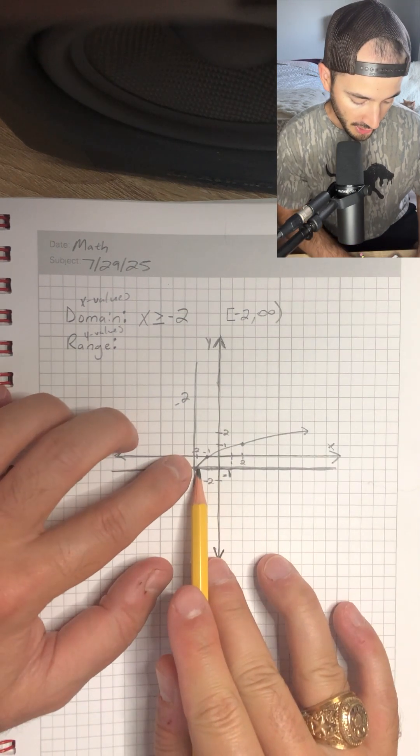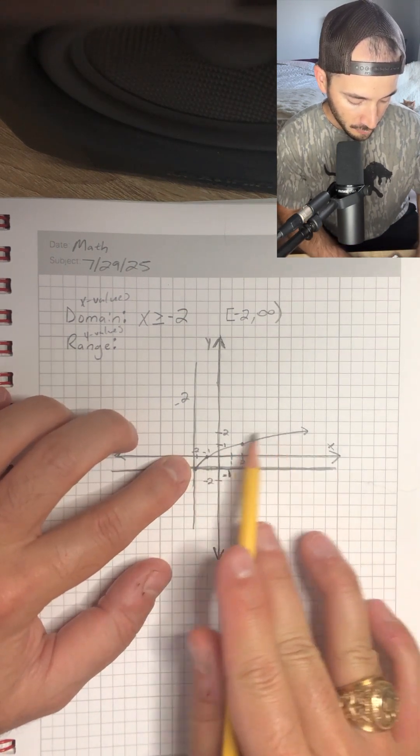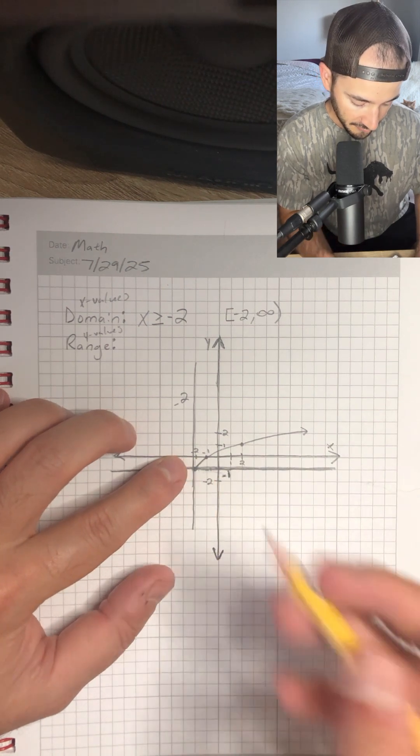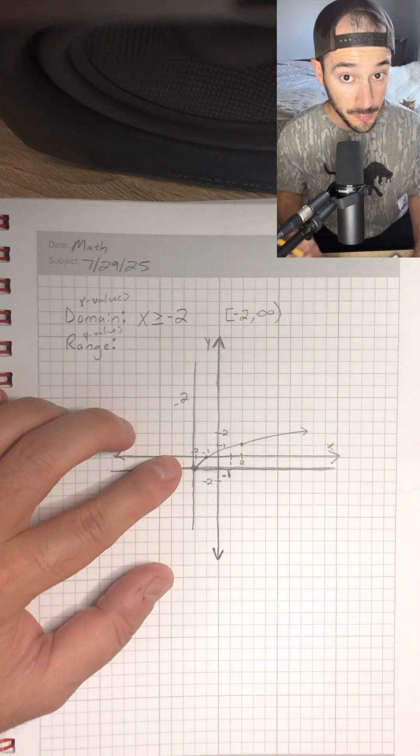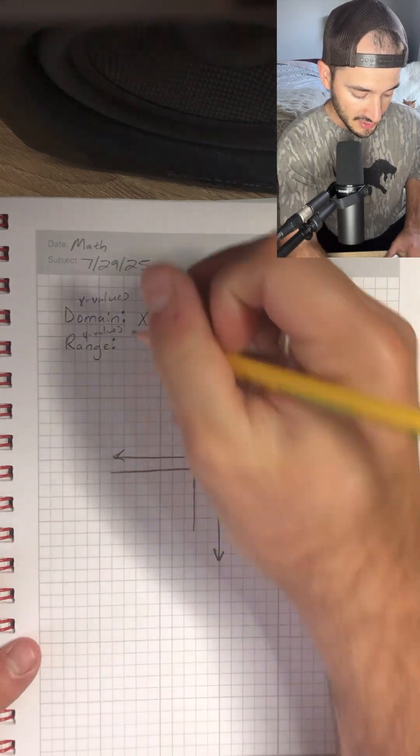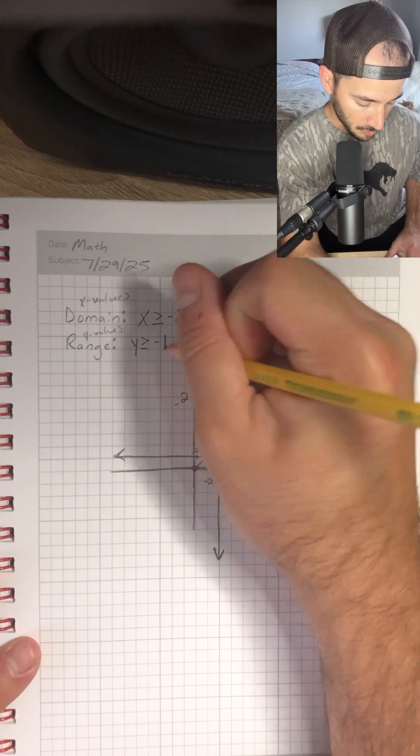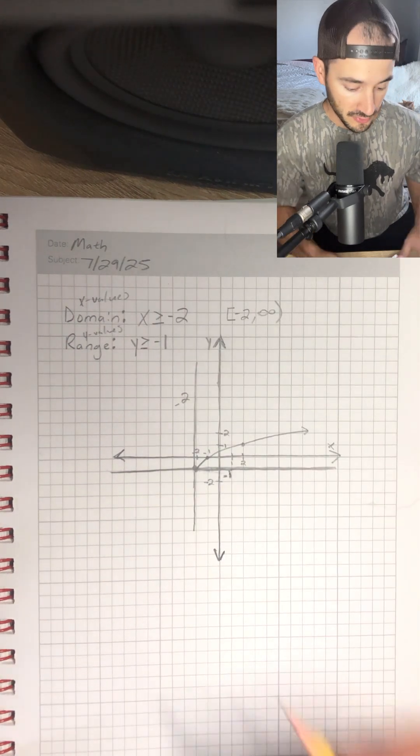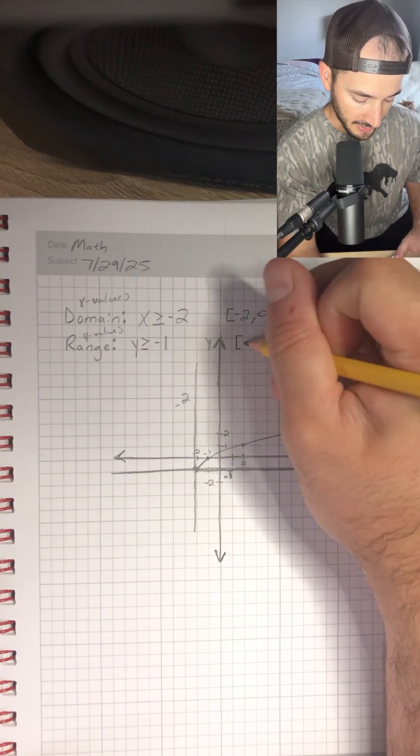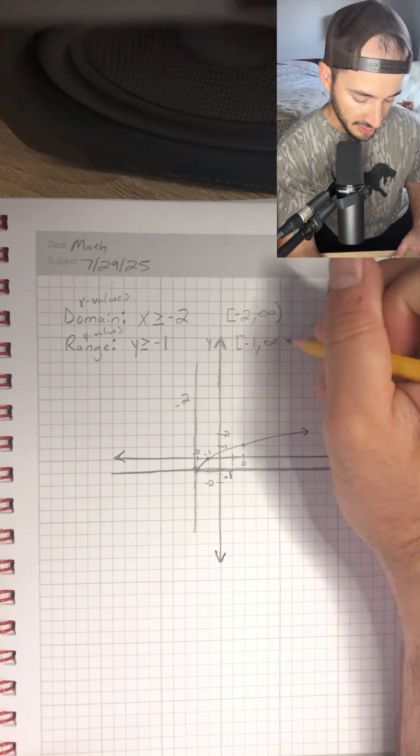So our graph goes greater than negative 1, and it also equals negative 1 because it's a filled in circle. It's not an open circle. So that means my range is y is greater than or equal to negative 1. And then my interval notation would be brackets negative 1 comma infinity parentheses.